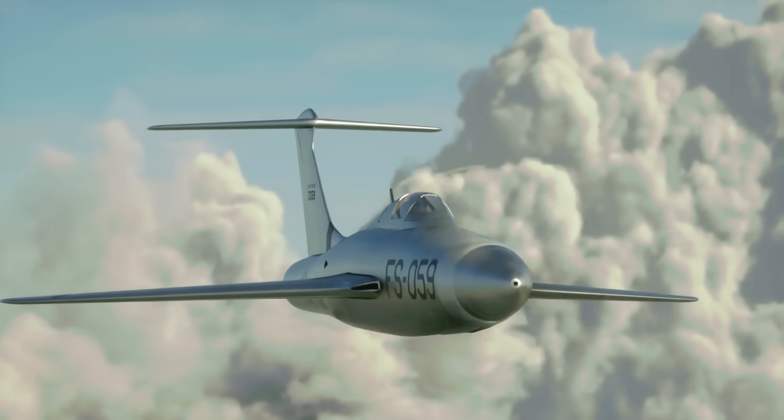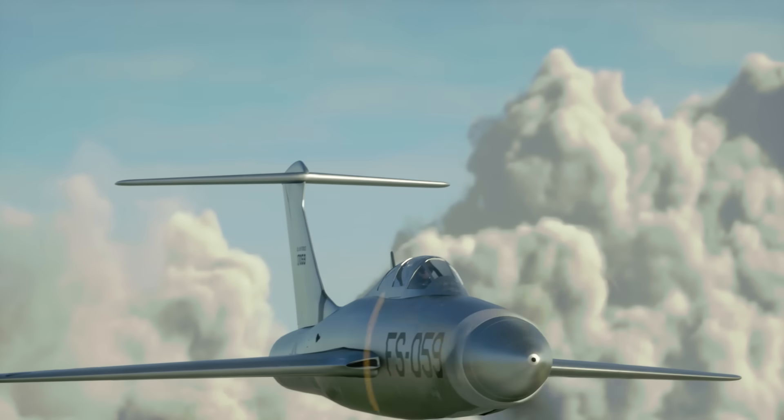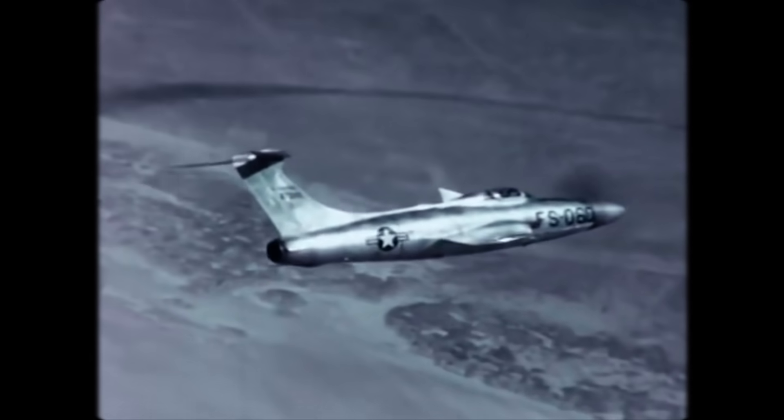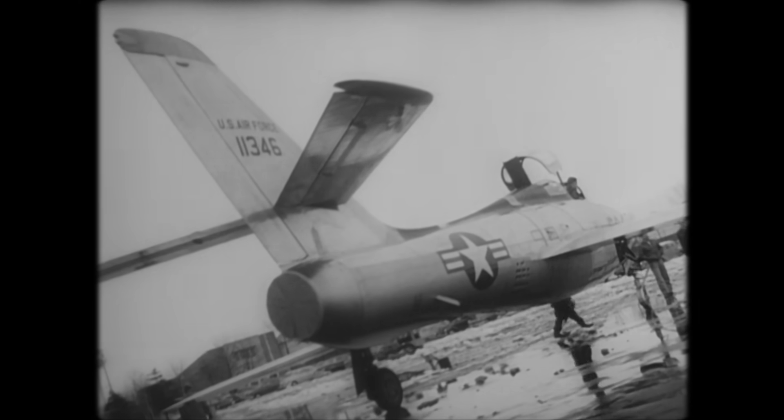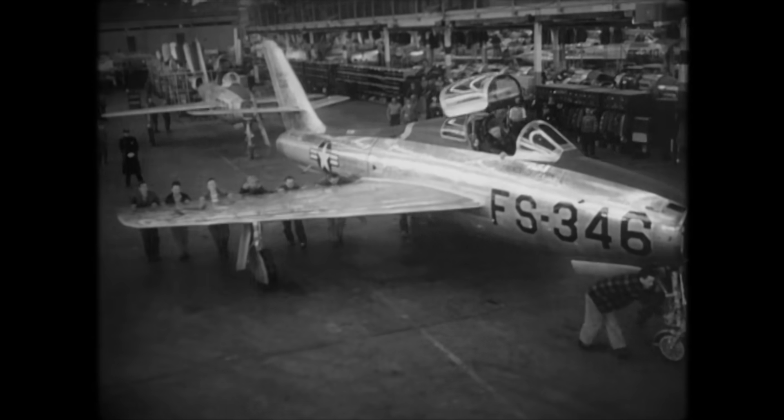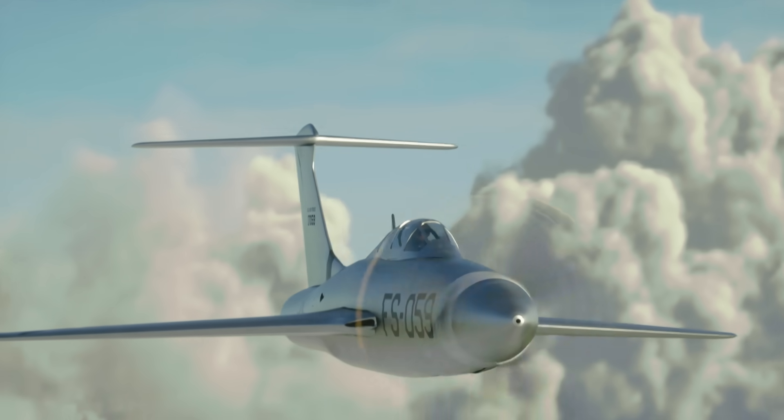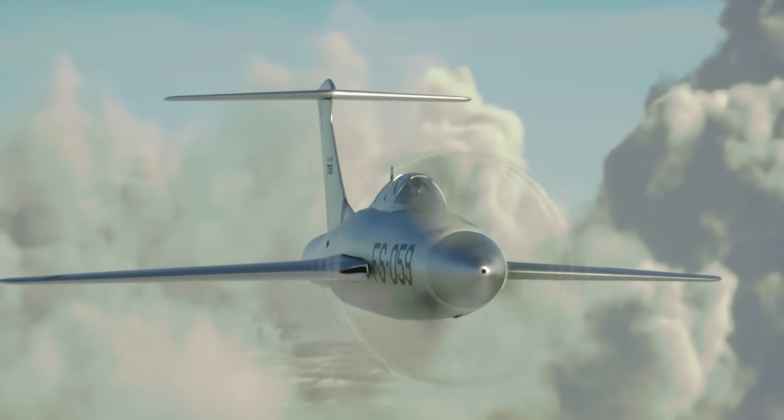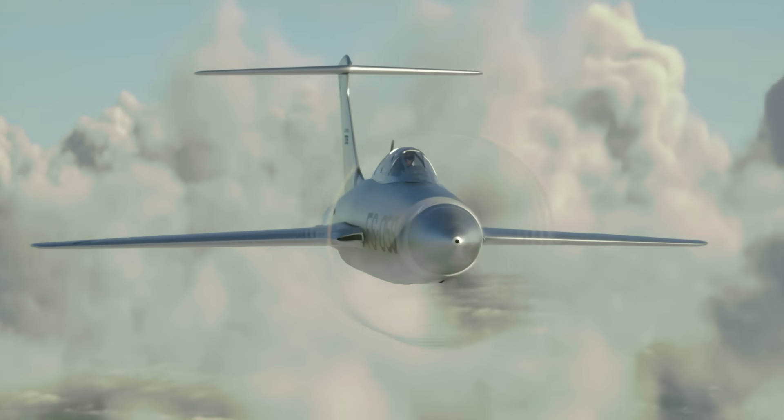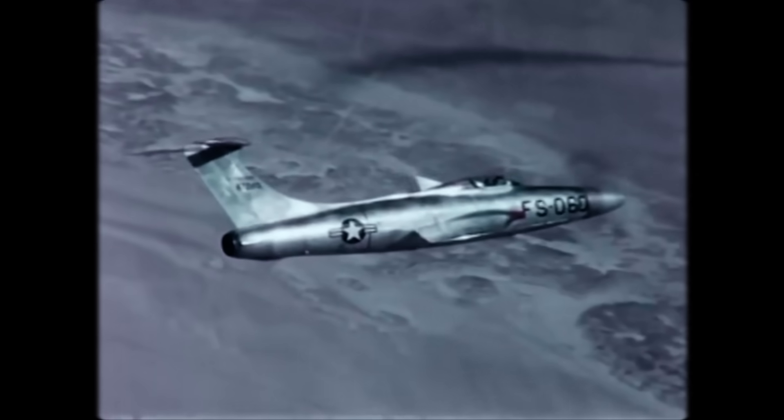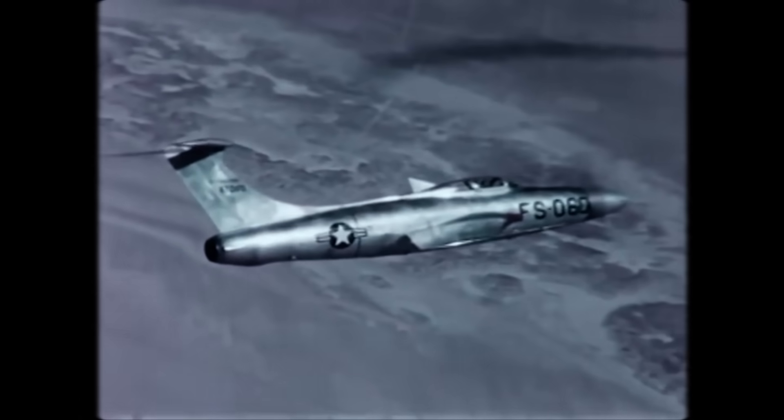Another unique feature of the Thunderscreech is its T-tail configuration, which particularly stands out because it required a modification from the F-84F Thunder Streak jet fighter, which the Thunderscreech was based on. This was done to get the stabilizer out of the way of the prop wash and the turbulence associated with it, which could reduce authority of the stabilizer during pitch.